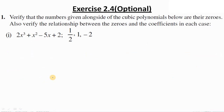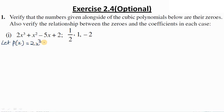Coming to the first question: verify that the numbers given alongside the cubic polynomials below are their zeros. Also verify the relationship between the zeros and the coefficients. Let the polynomial be p(x) = 2x³ + x² - 5x + 2. We have to verify that 1/2, 1, and -2 are zeros of this polynomial.